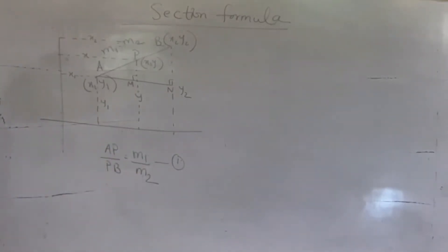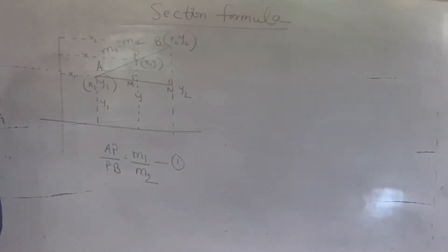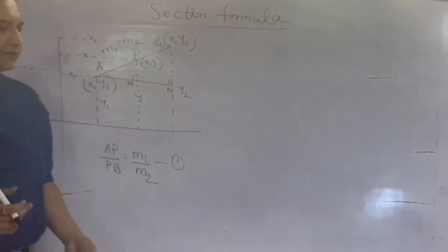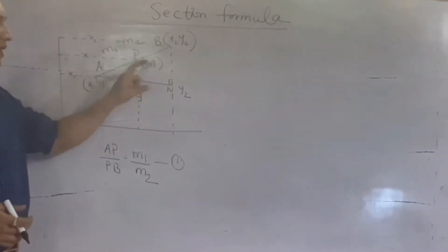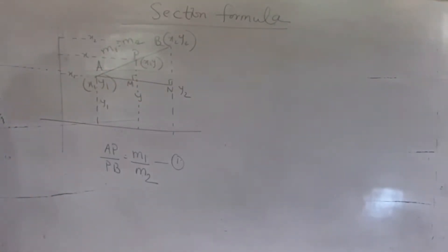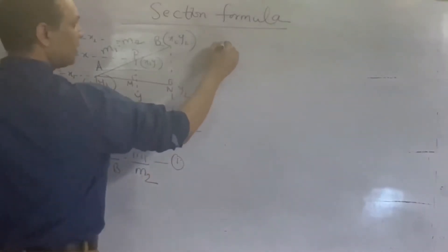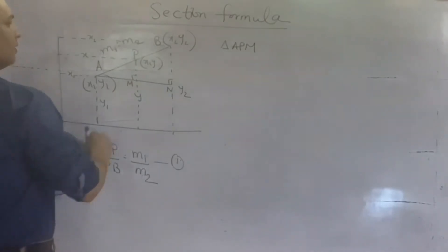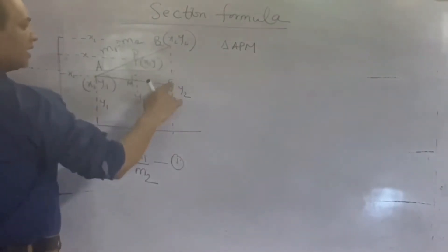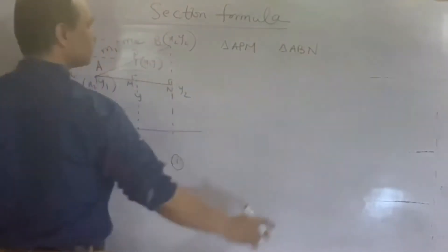ये first equation मेरे नाम लेता हूँ। दो triangles लेता हूँ। मेरा purpose क्या है — निकालना X और Y की value है, point P के जो coordinates हैं वो अपन को पता करने हैं। सबसे पहले मैंने लिया triangle APM और triangle ABN।